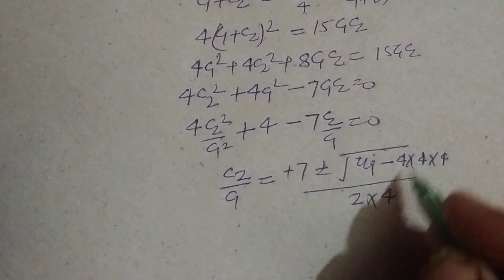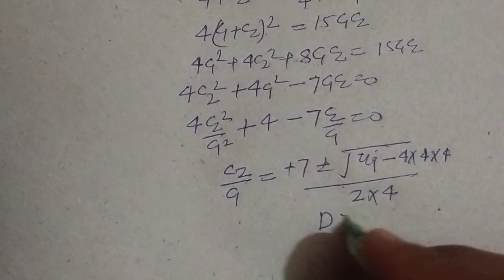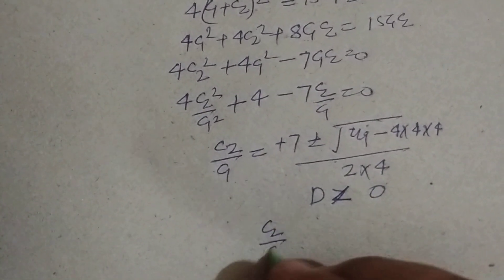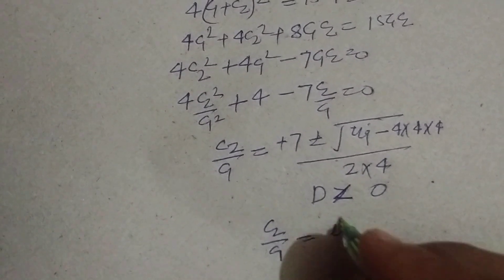Student, here the discriminant D is less than 0, therefore C2 upon C1 is imaginary.